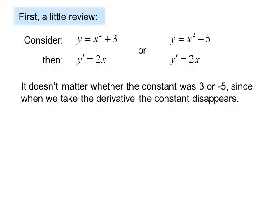First, a little review. Consider y equals x squared plus 3. Then y prime equals 2x. Or y equals x squared minus 5, y prime equals 2x. It doesn't matter whether the constant was 3 or negative 5, since when we take the derivative, the constant disappears.